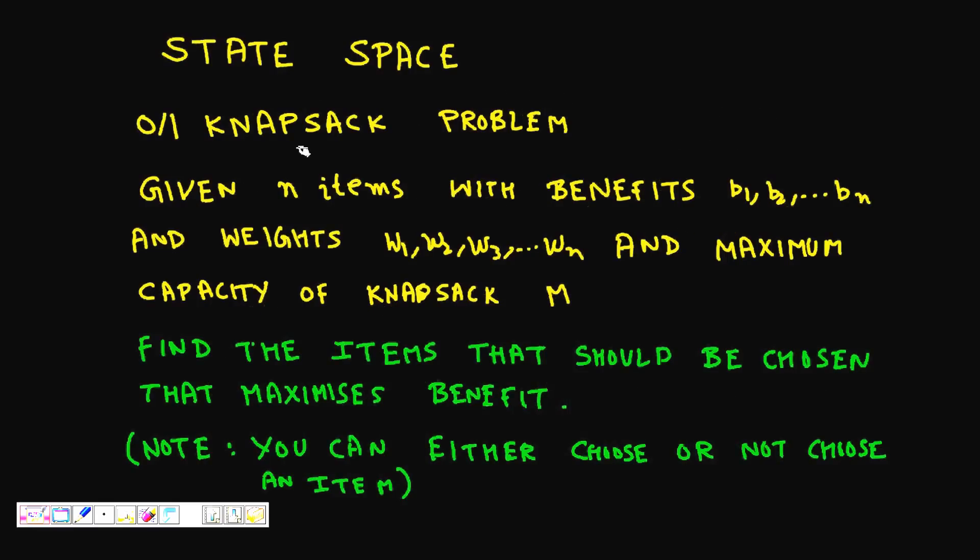This is the main method that is used in branch and bound. We will also learn about state space. Let's take one specific problem, the zero-one knapsack problem. We have already seen how to solve this using dynamic programming, but we will use branch and bound now to solve this.